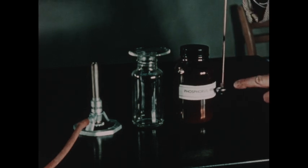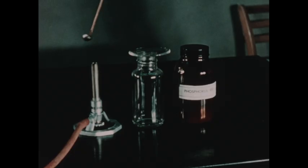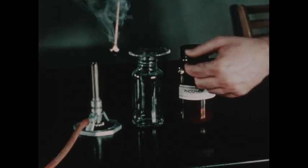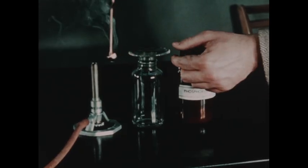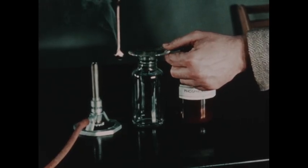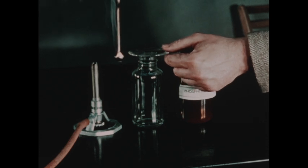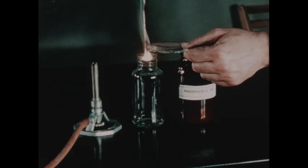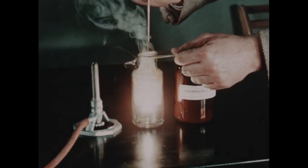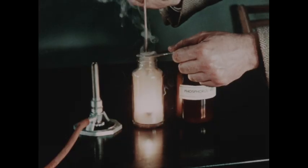I've placed some phosphorus from this bottle in the deflagrating spoon and we will ignite this now over the Bunsen burner. Notice the luminous white clouds of phosphorus pentoxide produced as the phosphorus burns. We'll now place the burning phosphorus in the nitric oxide. And you'll note that combustion is rapid, more rapid than in air.